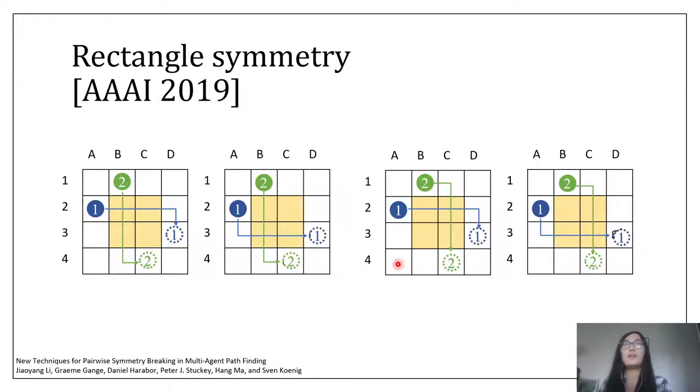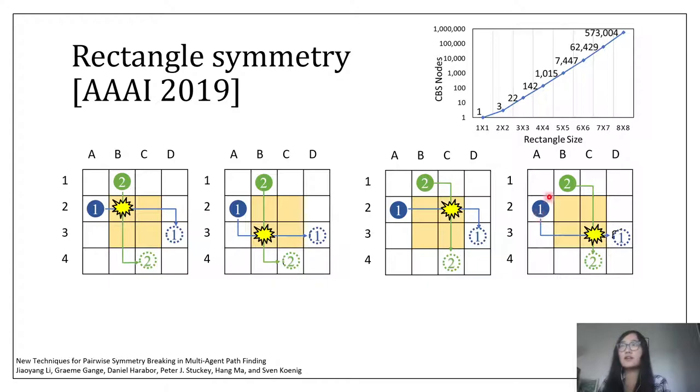However, in our last year's work, we show that CBS actually suffers from rectangle symmetry. If we think about this example carefully, actually each agent has multiple shortest paths to reach its goal location. However, every combination of these shortest paths collides somewhere inside this yellow area. CBS actually has to try many combinations of these shortest paths, and finally realizes that one of the agents has to wait for one time step to resolve all collisions between these two agents. Even worse, if the size of the yellow area increases, like here, then the size of the CBS tree also grows exponentially.